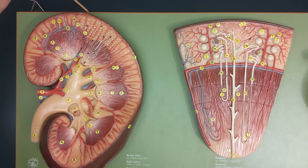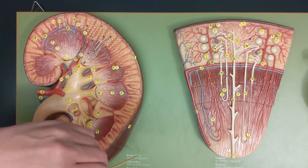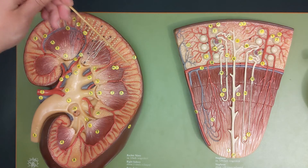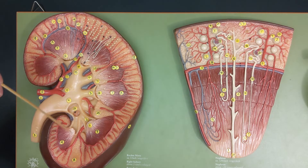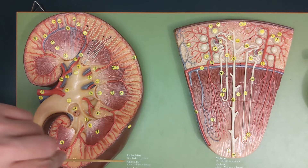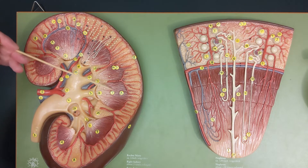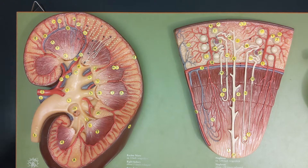Think about what is the name of the outermost layer, and even though we can't see it on this model, outside of this layer there's a layer of fat. Also think of this layer and the inner layer. The outermost layer of fat that we can't see here is the perirenal fat capsule. Underneath that is the renal capsule, which is just connective tissue. Then this lighter outer layer is the renal cortex, and the starker inner layer is the renal medulla. Remember, a cortex is always an outer layer; a medulla is always an inner layer.